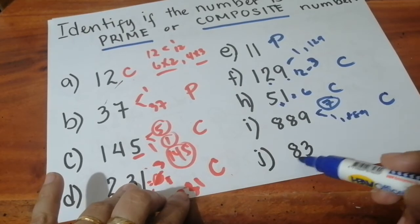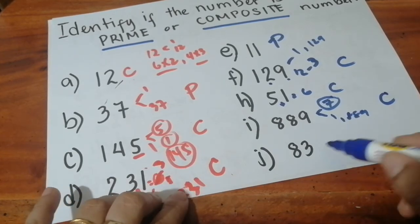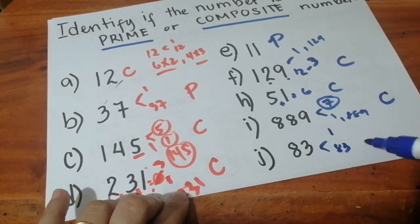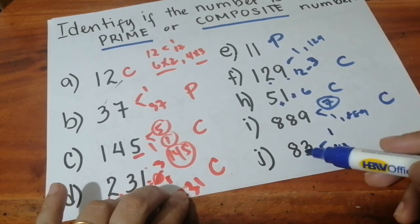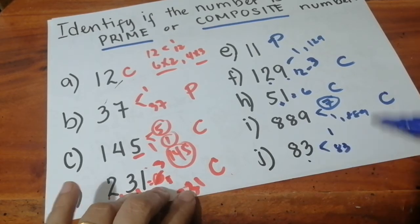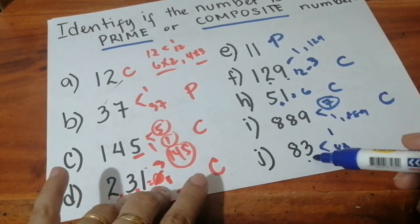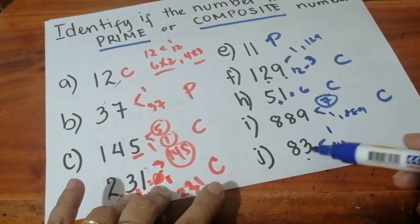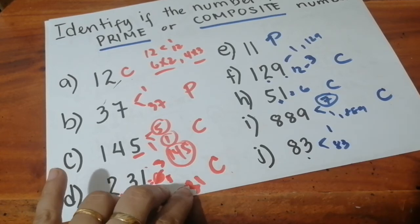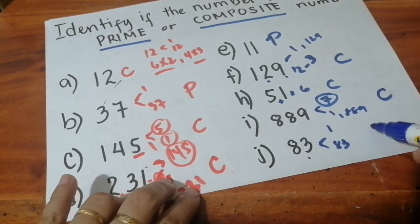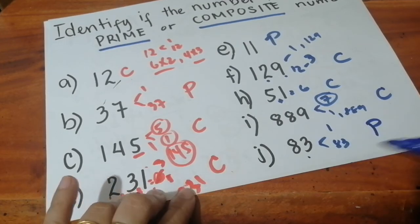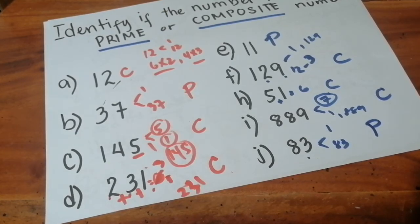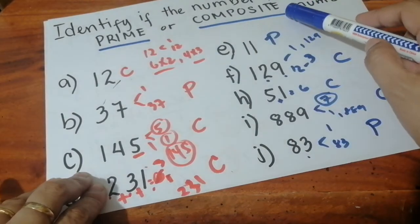And lastly, eighty-three. The factors of eighty-three are only one and eighty-three. It doesn't end in an even number, zero, or five, so it's not divisible by two, five, or ten. When you add the digits, it won't give you a multiple of three or nine either. Therefore, eighty-three is a prime number, since its only factors are one and eighty-three. That's how we identify if a number is prime or composite.